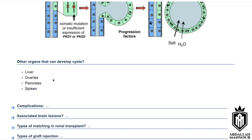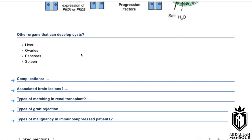Other organs affected include the liver, pancreas, and spleen. In terms of the brain, the commonest presentation is a brain aneurysm. This is mostly asymptomatic but can lead to subarachnoid hemorrhage, which presents with a severe thunderclap headache — the worst type of headache.